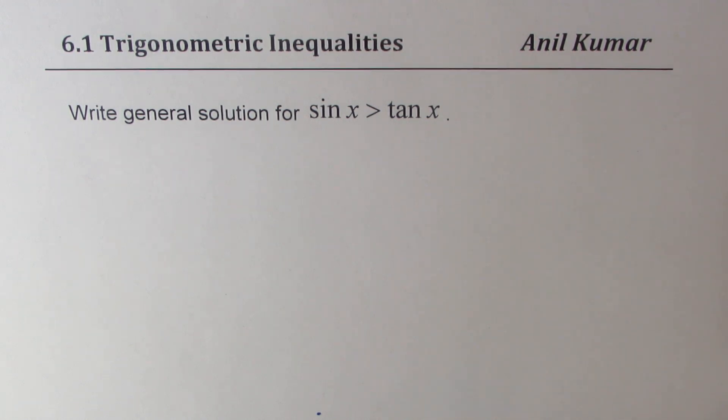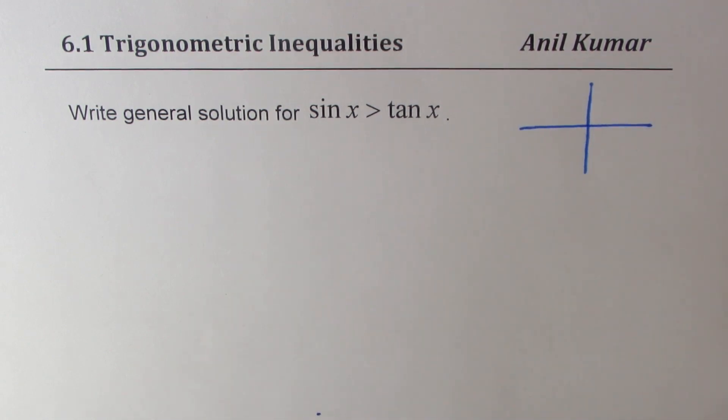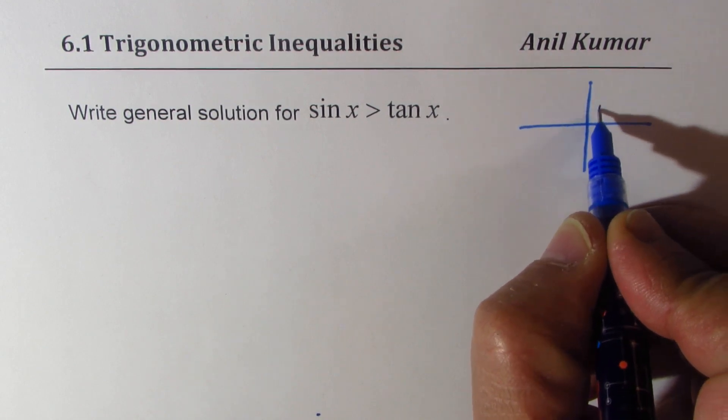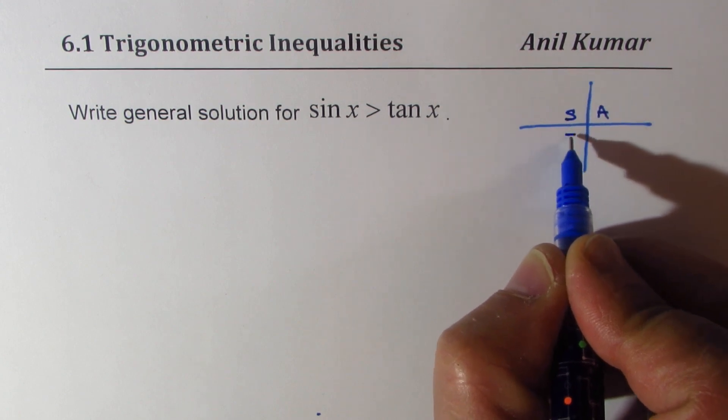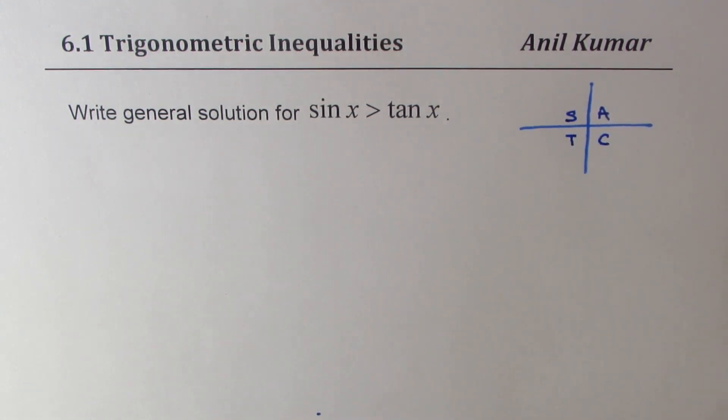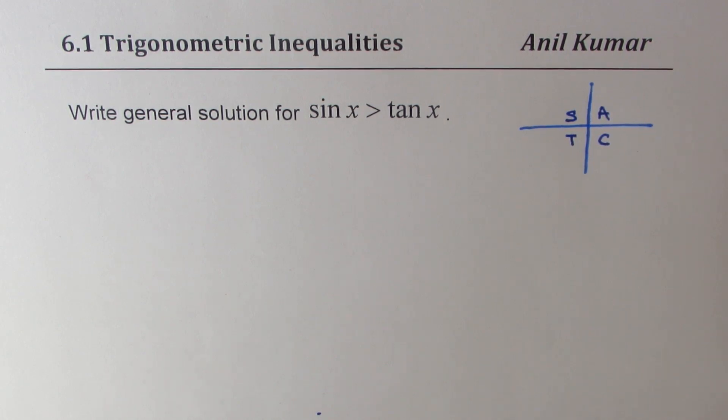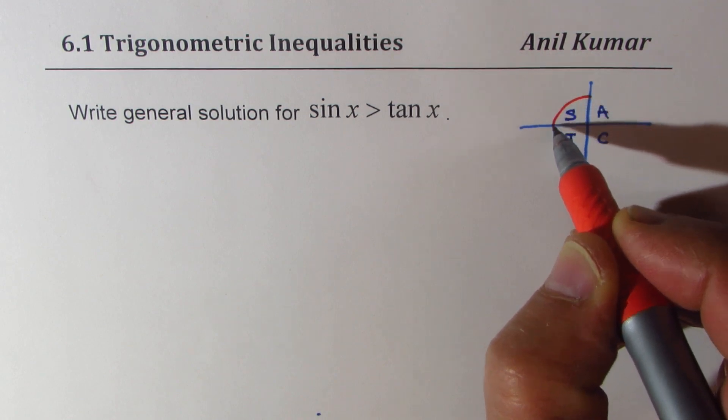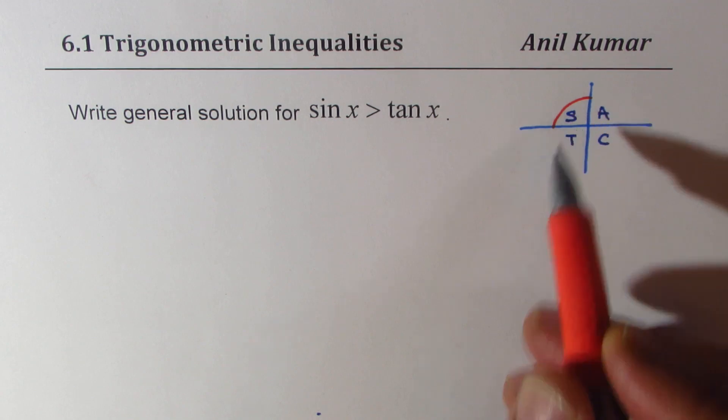Now let's look into a very broader aspect of solving this inequality. We know that in our quadrants, all are positive in quadrant 1, sine is positive in quadrant 2, tan in 3 and cosine in 4. Now if you look into these quadrants itself, we can see very clearly that sine x greater than tan x, since sine is positive here, sine x has to be greater than tan x. In this quadrant, tan is negative.